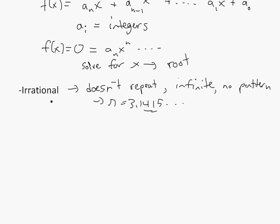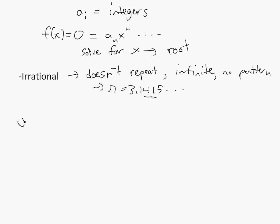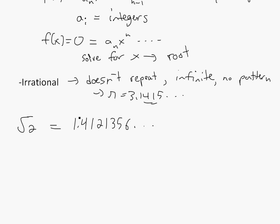But not all irrational numbers are transcendental numbers. For example, square root of 2 — this one is irrational. If you put it in a calculator you get 1.41421356 et cetera. But this isn't transcendental because it could actually be written as a root of a polynomial equation. So it's irrational, but not transcendental.